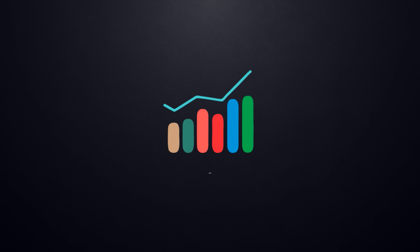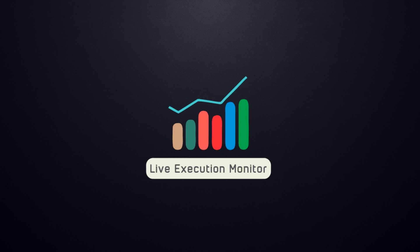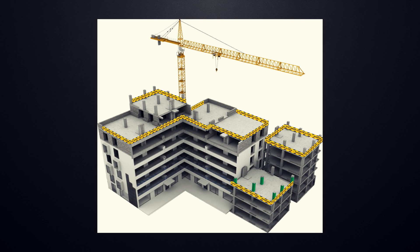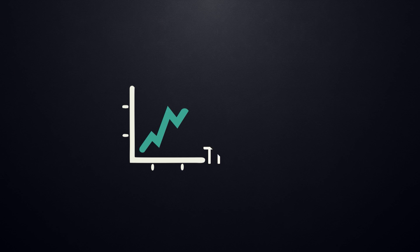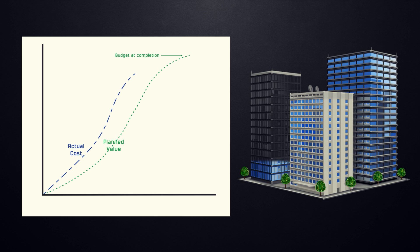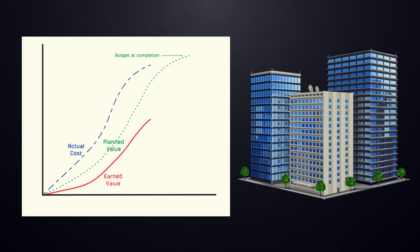The Live Execution Monitor extracts information of the work completion status from work inspection requests and automatically updates it on a 3D model of the structure. This enables any user to update themselves with the site progress from anywhere, dynamically. This information also assists live schedule tracking by comparing plan versus actual progress and carrying out earned value analysis, helping managers to strategize and speculate.